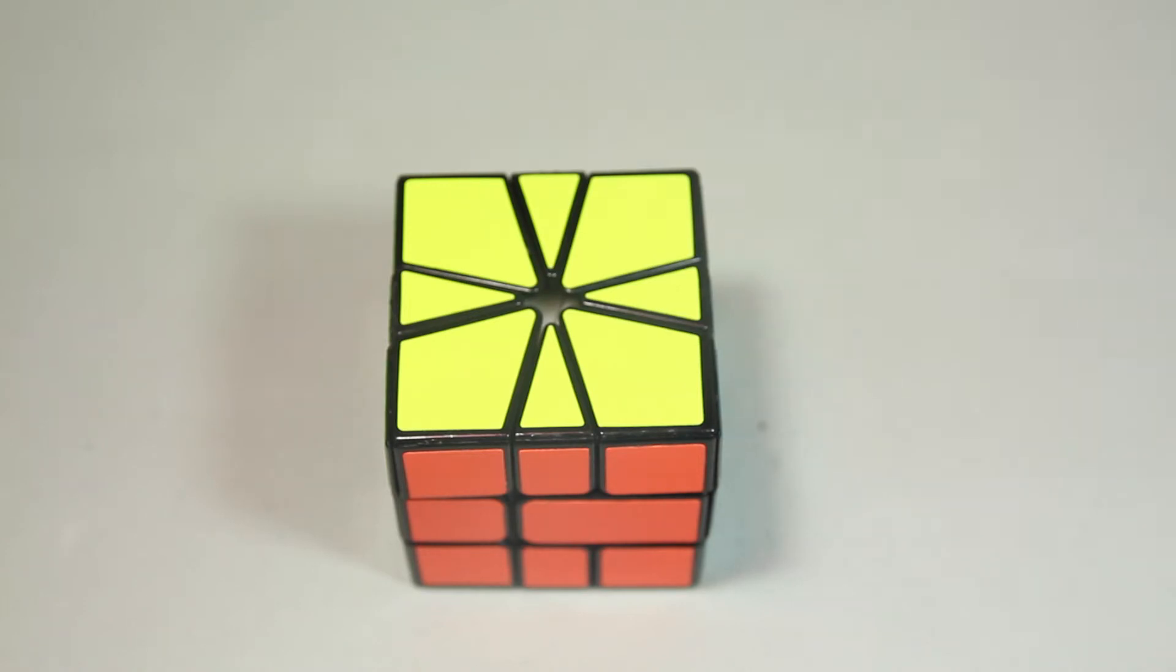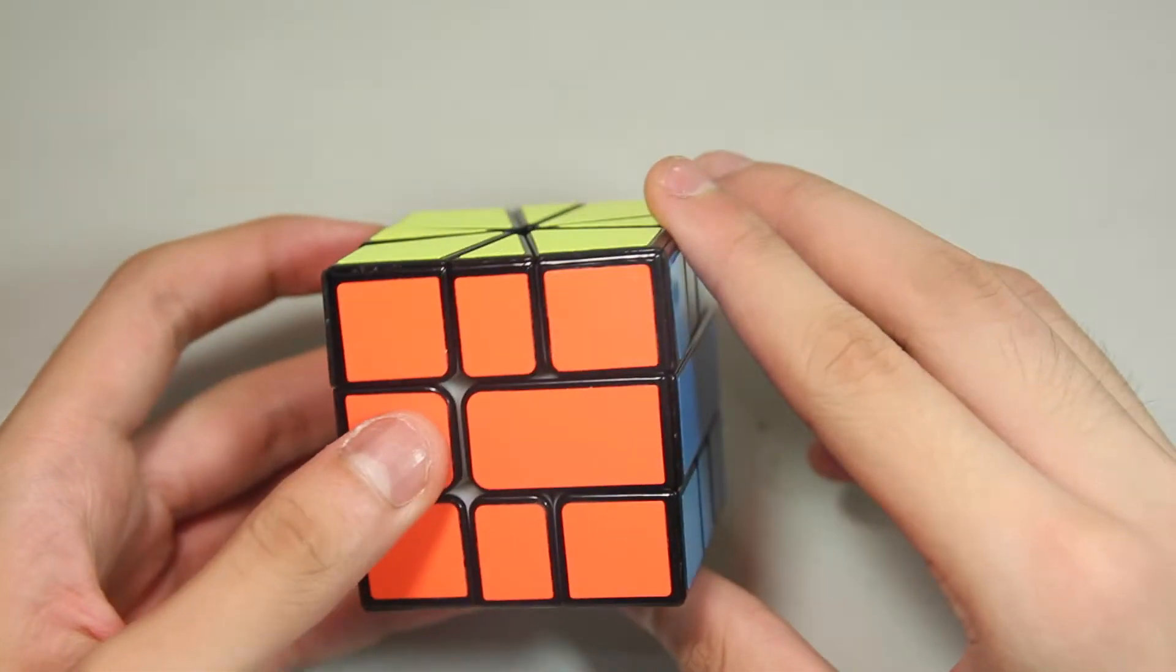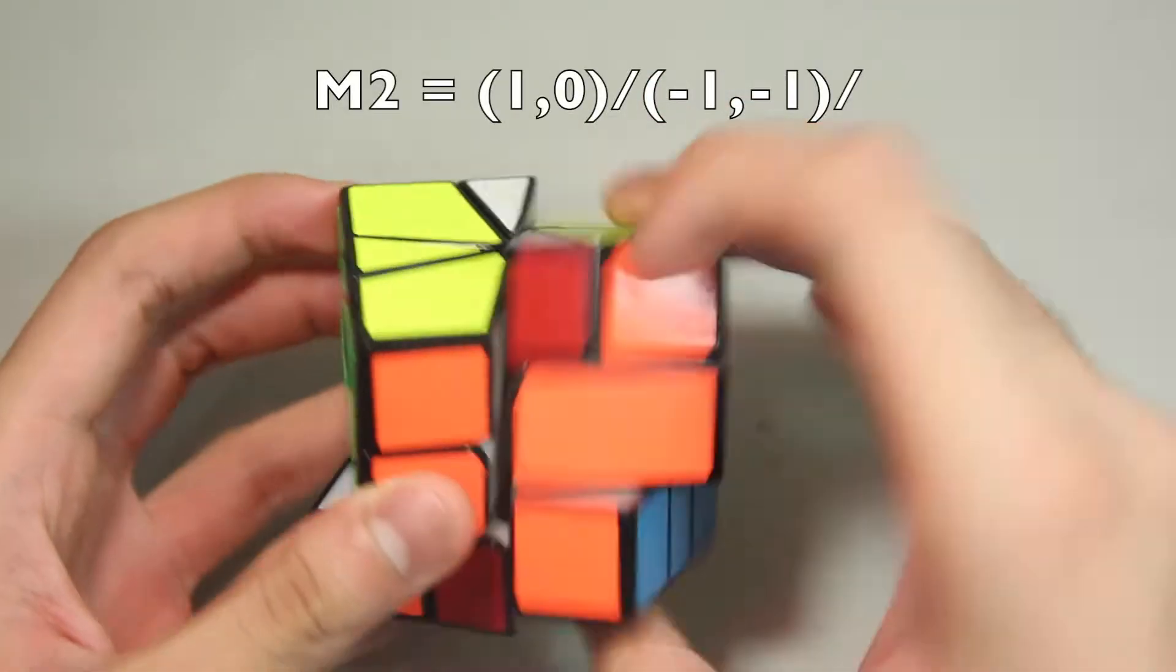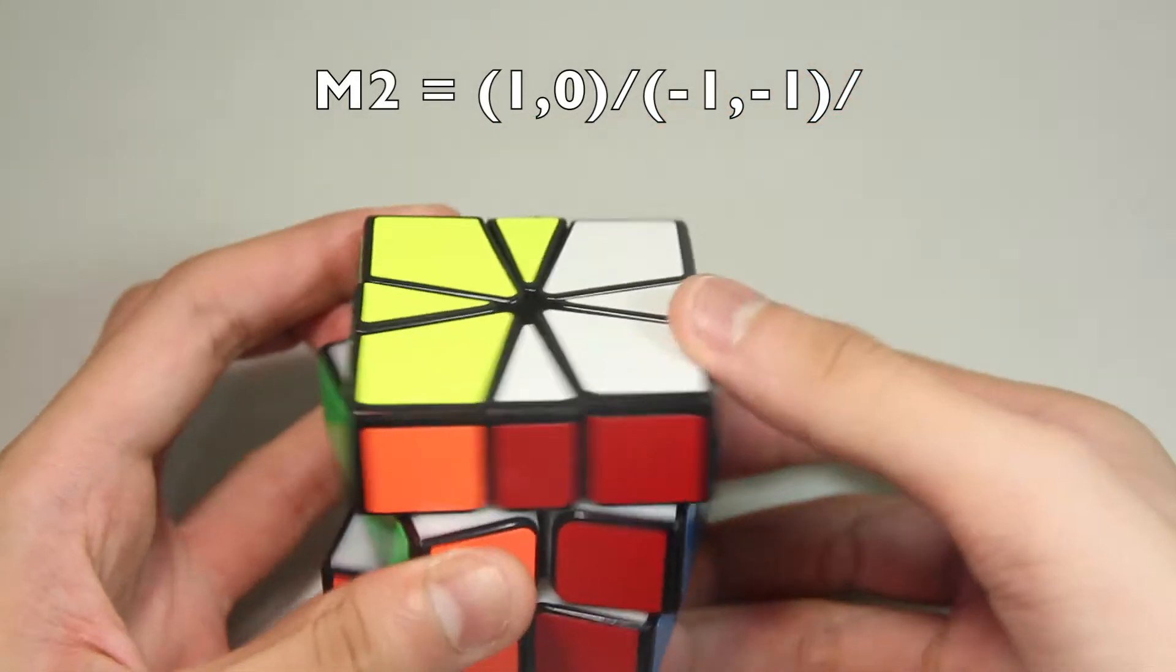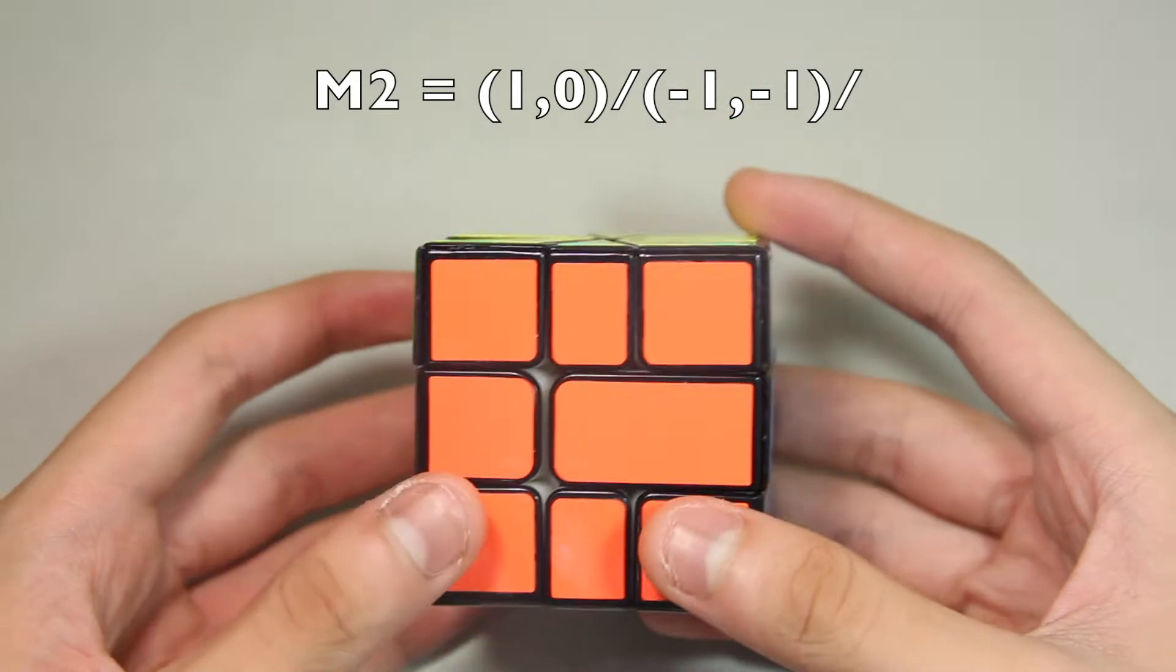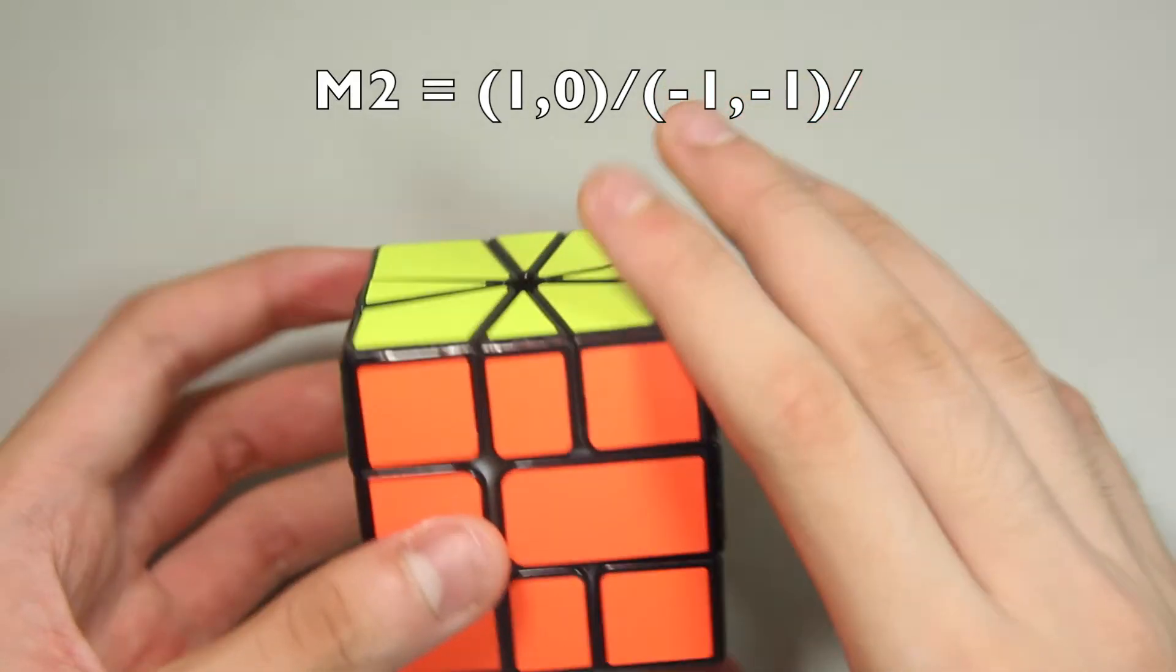Hey guys, today I'm going to show you edge permutation cases that involve using the M2 move. The M2 is basically just the EO case where you do the two lines like that. And there are a lot of EP cases that you can use this algorithm for.